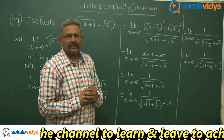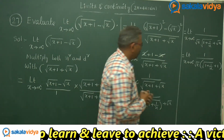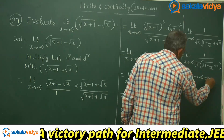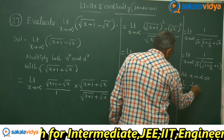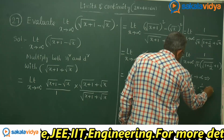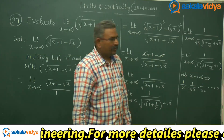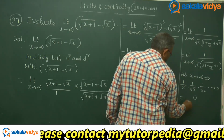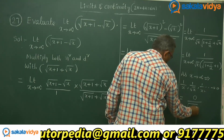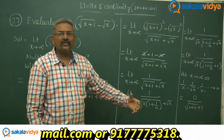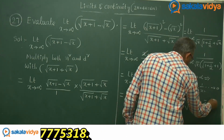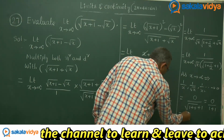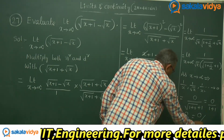Here is a very important fact to remember: as x tends to infinity, 1 by x, 1 by root x, and 1 by x squared all tend to 0. So 1 by root x becomes 0, giving us 0 divided by root of 1 plus 0, plus 1. The value of root of 1 plus 0 is 1, so we have 0 divided by 1 plus 1, which is 0 divided by 2. Since 0 divided by anything is 0, the required limit is 0.